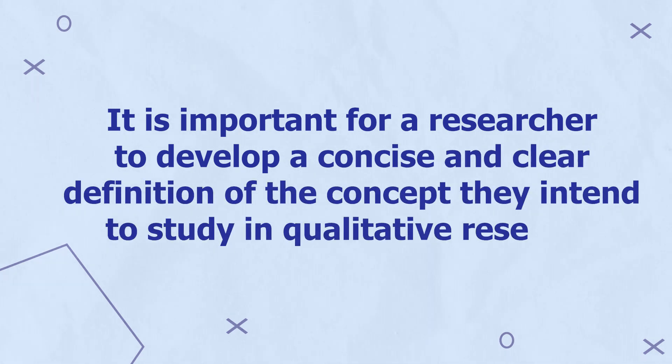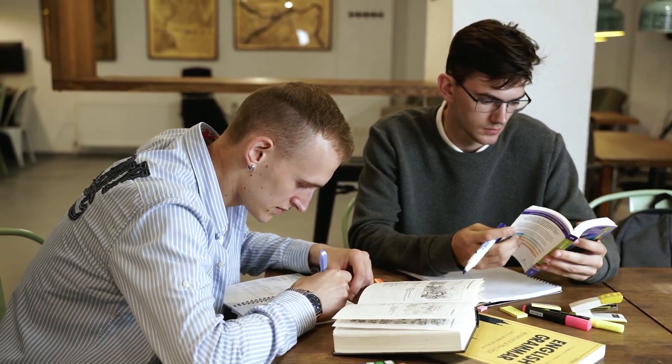It's therefore important for a researcher to develop a concise and clear definition of the concept they intend to study in qualitative research. To develop a clear and concise definition of a given concept, we need to conduct a thorough literature review related to the concept. After conducting a thorough review of literature related to being educated, we can find that being educated can be defined in terms of the highest level of educational achievement, the official educational qualifications that an individual has, or the number of years of attending formal school. In this case, the concept of being educated has three dimensions. A qualitative researcher has to determine which dimensions they are going to focus on in their particular study.